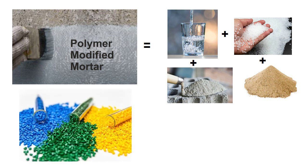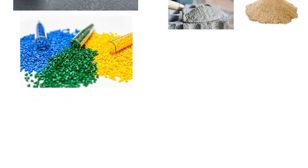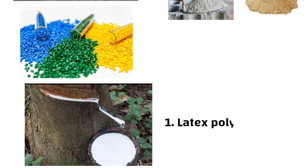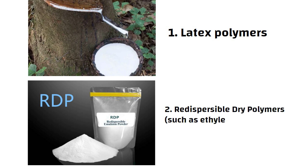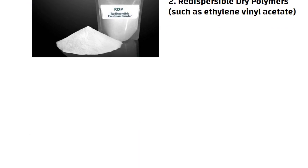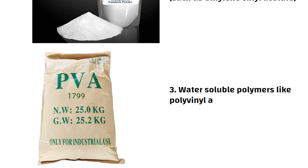There are different types of polymers which are used to make polymer modified mortar. Latex polymers, redispersible dry polymers such as ethylene vinyl acetate, water soluble polymers like polyvinyl alcohol.